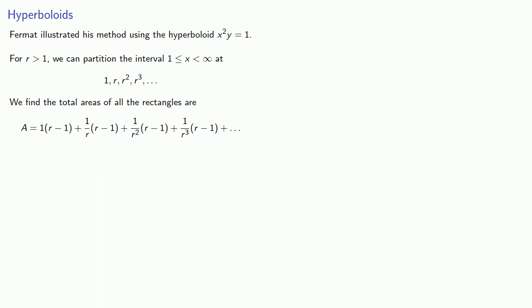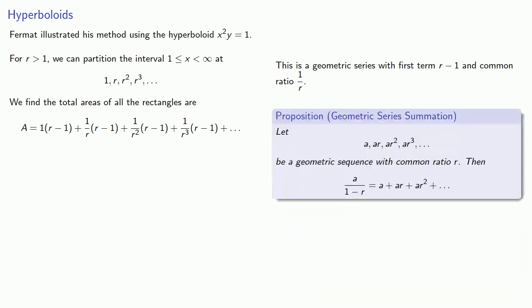Now if we take a look at our expression for the total area, we see that it's a geometric series with first term r minus 1 and common ratio 1 over r. But there's an app for that. Well, there's a theorem at least. And our theorem says the sum of the series is the first term, r minus 1, over 1 minus the common ratio 1 over r. And if we do a little simplification.